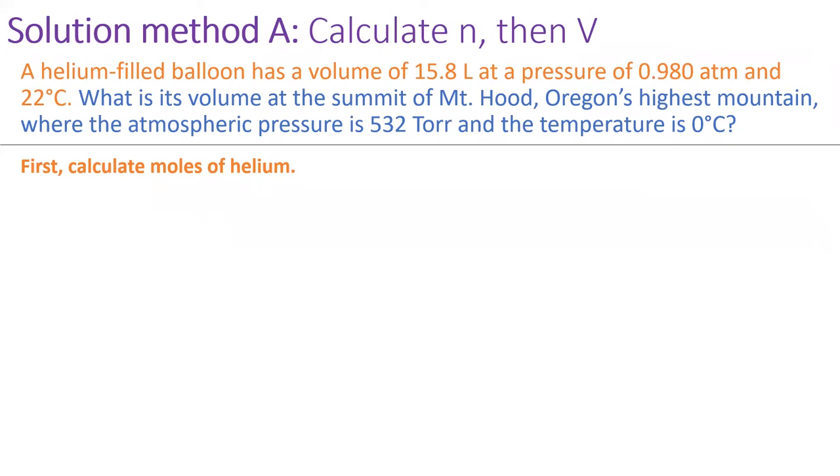There are actually two ways to solve this problem. The first way is more straightforward, but takes a bit longer. In the first way, we'll calculate moles of helium in the balloon from the volume, pressure, and temperature given in orange. Then we'll take the amount of gas to the top of Mount Hood and calculate the volume from the information in blue.